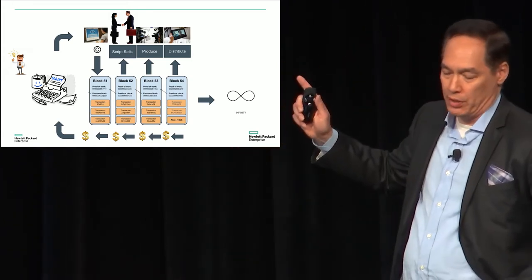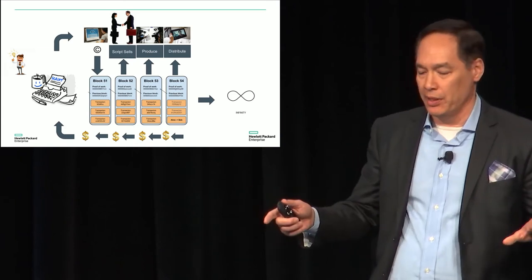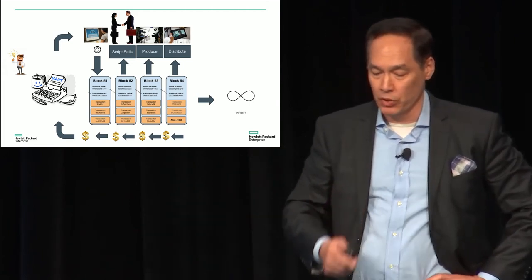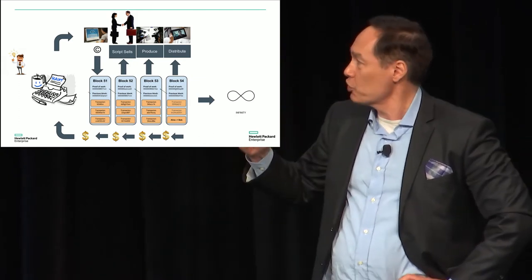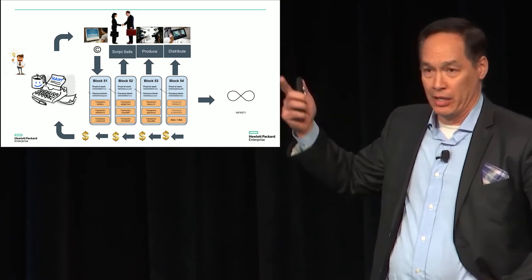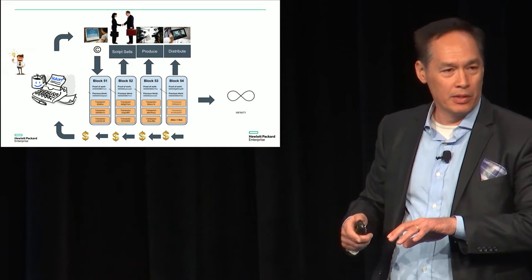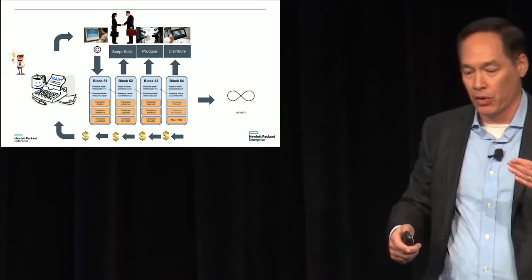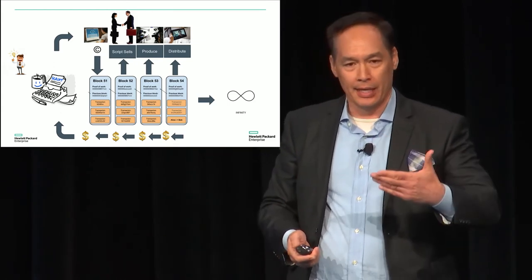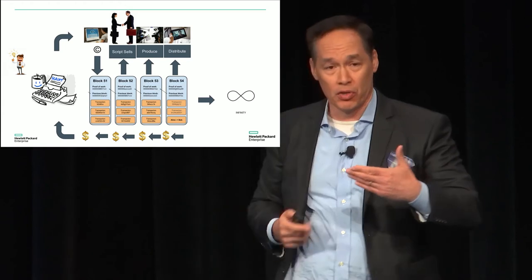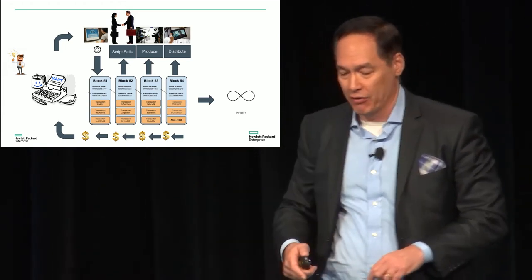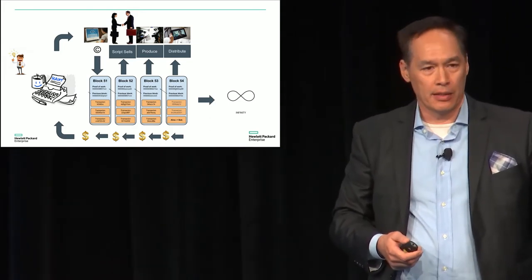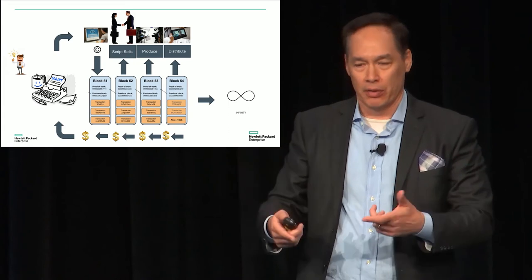Here is a simplified version of what this could look like — no guaranteed answers, just possibilities for new business models. Say I come up with a great idea for a script, write it, and register with the Copyright Office — I get a number back. Or I register with Writers Guild West or East and get a recorded number. That's where we start the blockchain — that's the first block, say block 51. That's my proof of work. Anyone going through can say, yes, this is the correct tracing of IP; this person has the right to sell it.